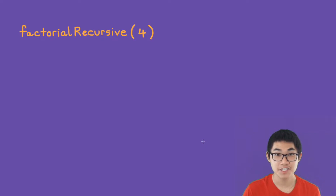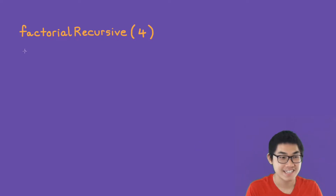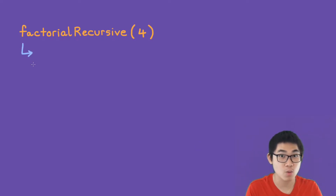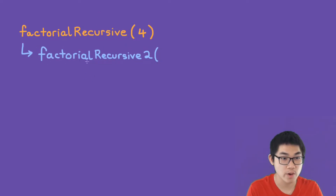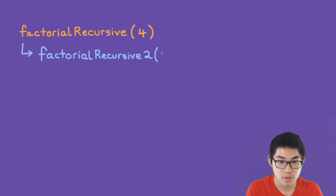The first step to writing any recursion is to draw a recursion tree, and let me show you how to do it. This function will call another function called factorial_recursive_v2, and it is going to have three parameters: the i value starting at 2, the number 4 (which is what we want the factorial of), and the total which is 1.